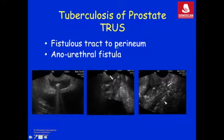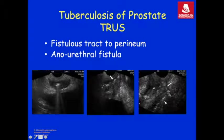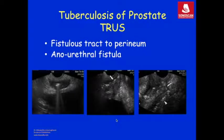There may be fistula tracts to the perineum or an anorethral fistula due to prostatic tuberculosis. On transrectal scan, gas is seen in the urethra; on a longitudinal scan, gas bubbles are visible in the urethra, and on withdrawing the probe, extension of gas through a tract from the prostatic urethra to the anal canal is visible — evidence of an anorethral fistula. The patient had other features of tuberculosis in the urinary tract and urine examination became positive for tuberculosis.